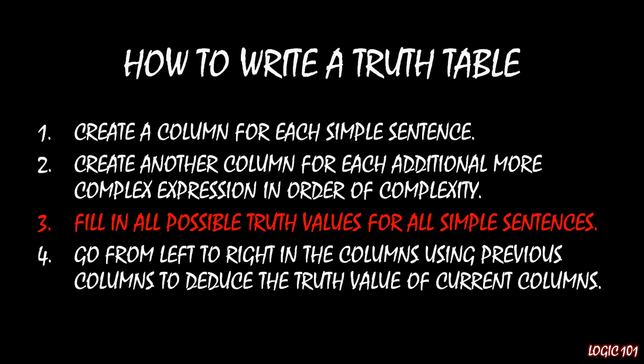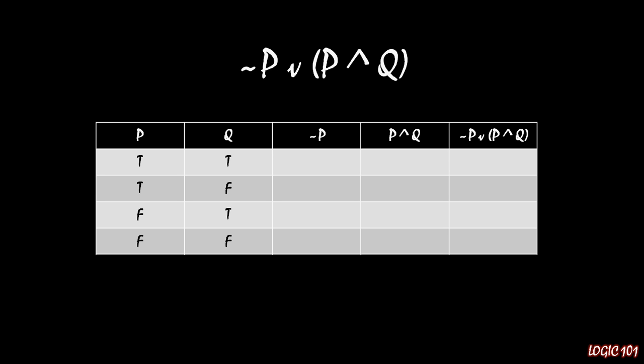The third step is to fill in all possible truth values for the simple sentences. So we have P and Q, just two simple sentences, which means we have two to the second power total possible values of truth for each of those. So we have four rows in total. Top row is where they're both true, bottom row is where they're both false, and the middle rows are where one is true and when the other is false.